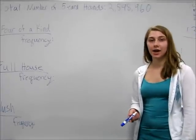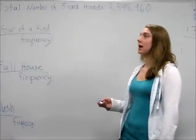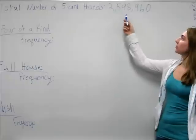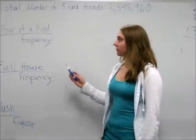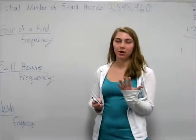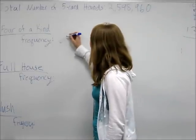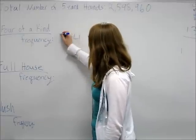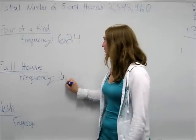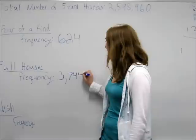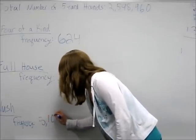To figure out the probability of a hand in poker, we first start out by calculating the total number of hands possible, which is 2,598,960. Then we figure out the frequency of a five-card hand. For a four-of-a-kind, the frequency is 624. For a full house, the frequency is 3,744. And for a flush, the frequency is 5,108.